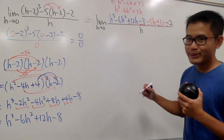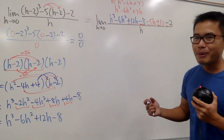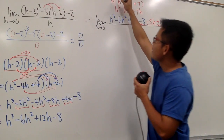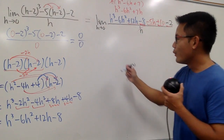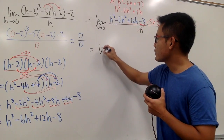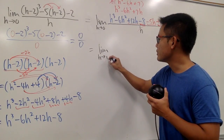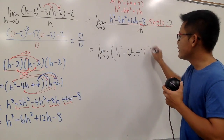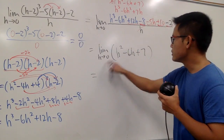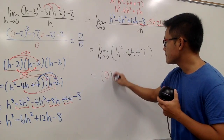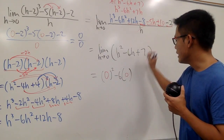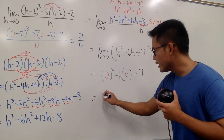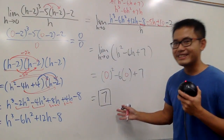Now, what good does that do? Well, this is the best part — something on the top is about to cancel something on the bottom. We can cancel the h on top with the h on the bottom. So we're just calculating the limit as h goes to 0 of h squared minus 6h plus 7. Plugging in 0: that's 0 squared minus 6 times 0 plus 7. We get that lucky number 7. That's it.